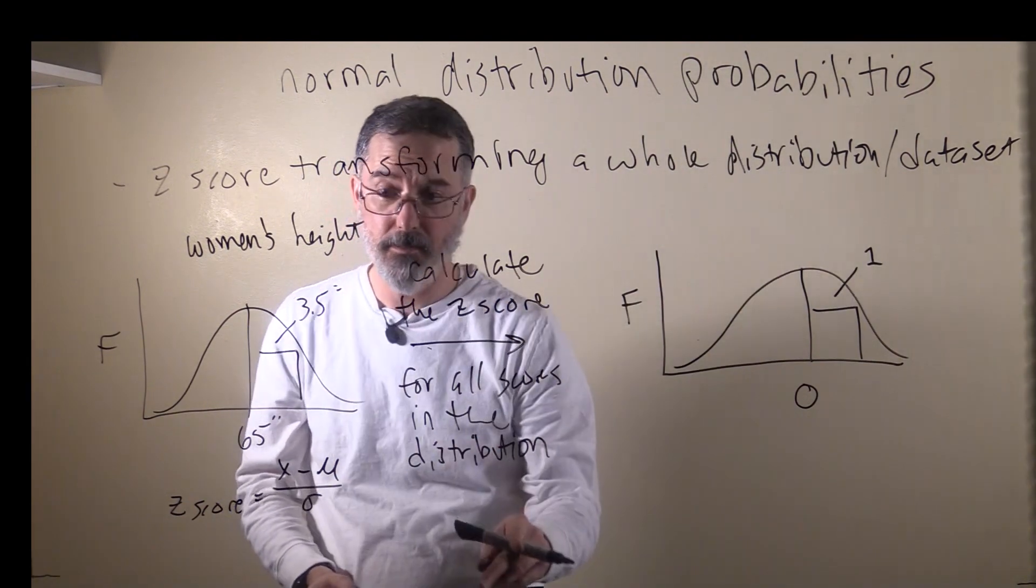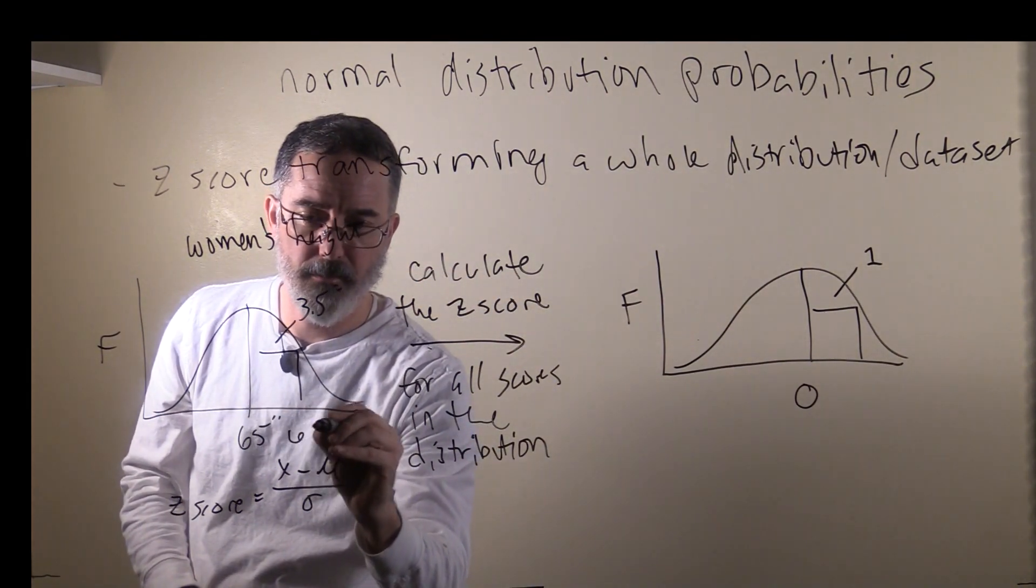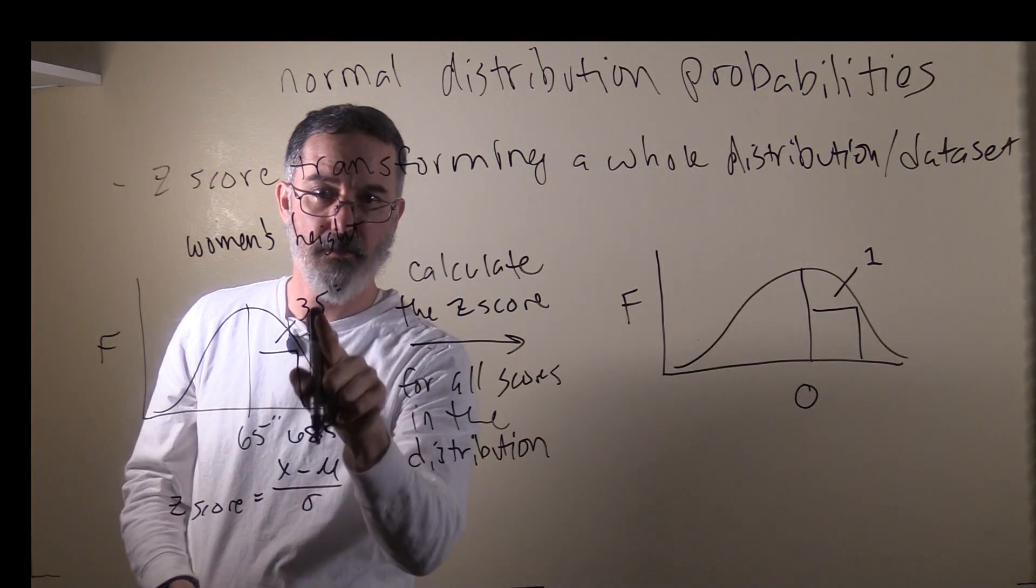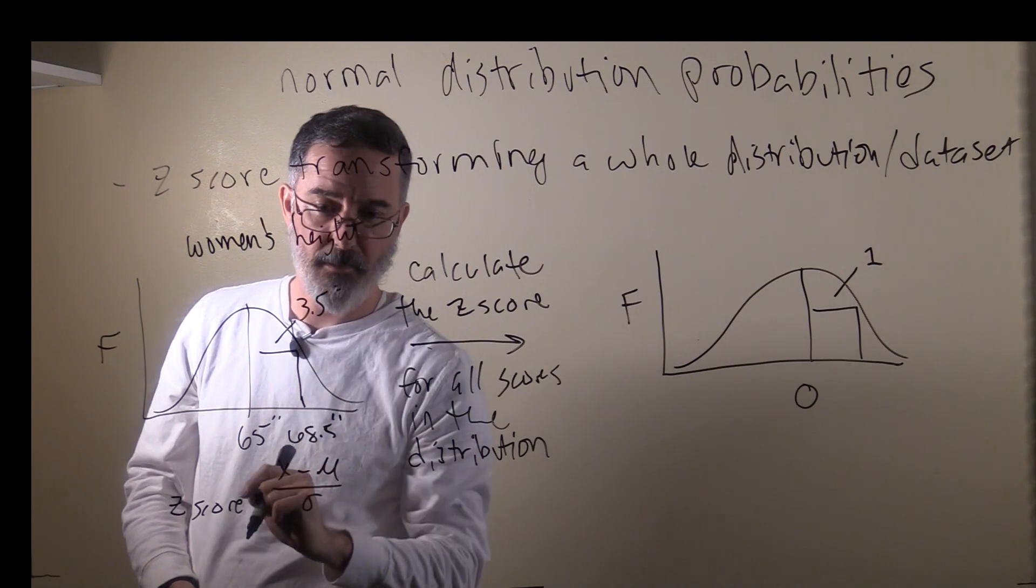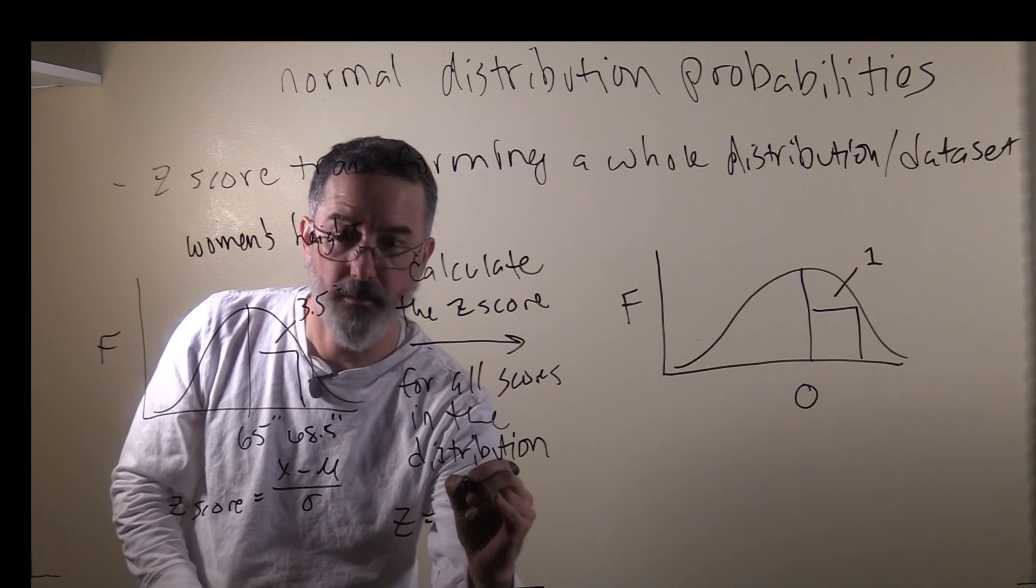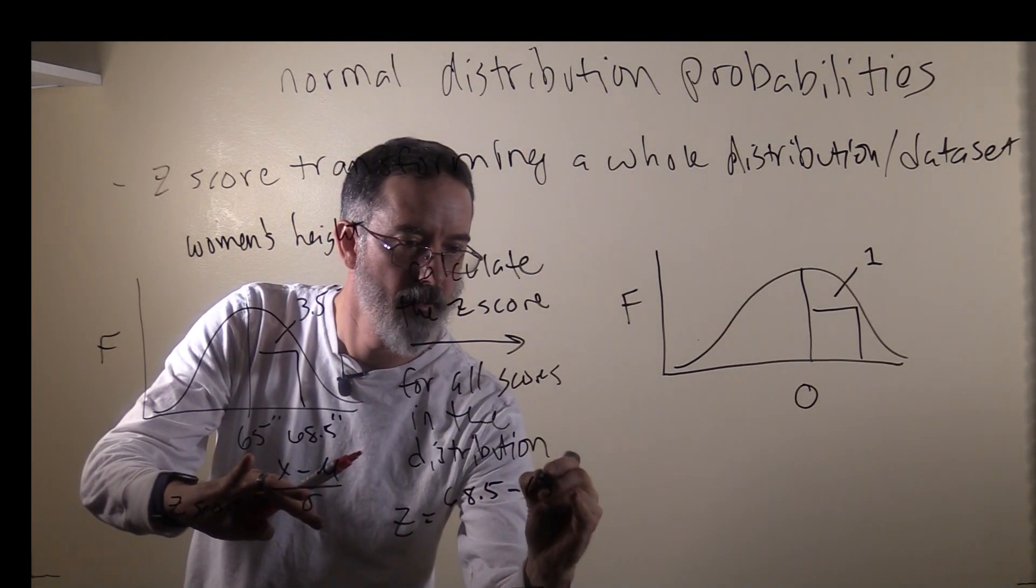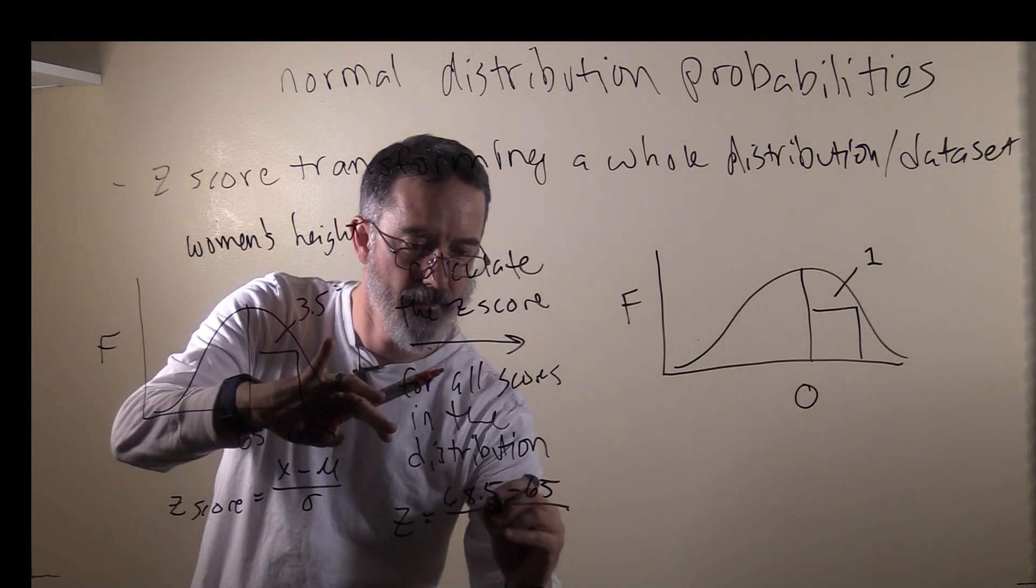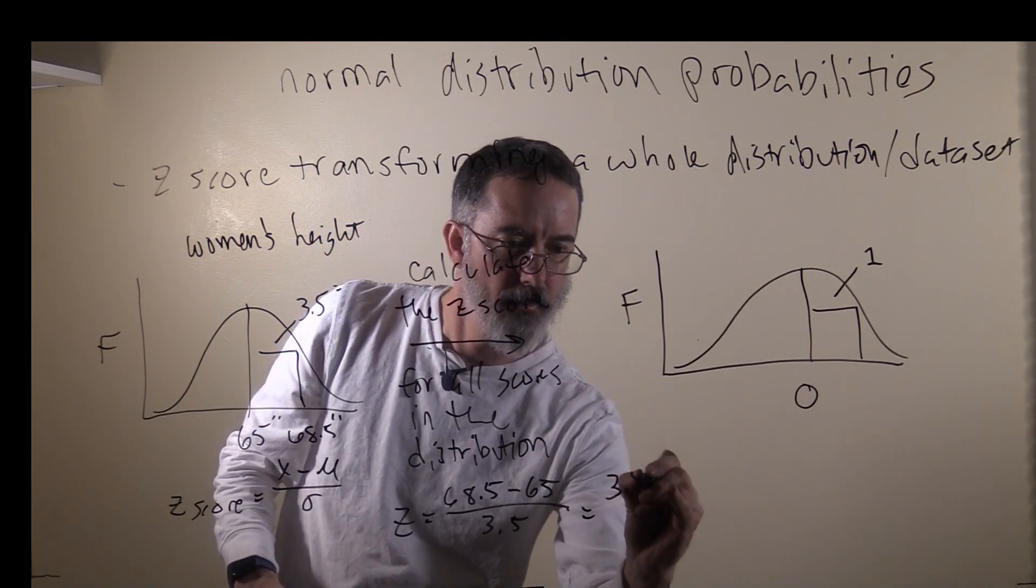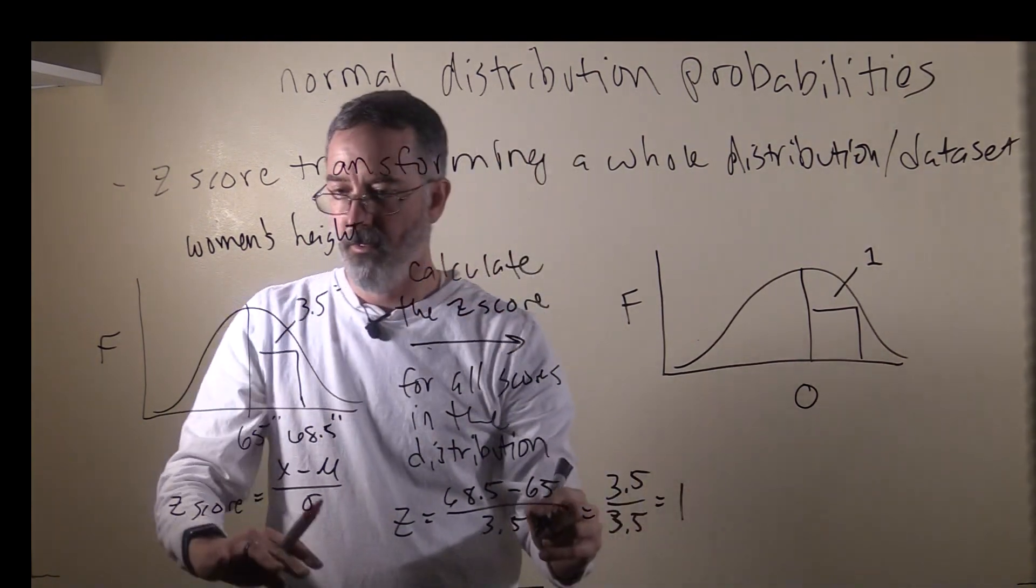Then, if we consider women who are one standard deviation over, they would be 68.5 inches tall. They would be right here because 65 plus 3.5 is 68.5. Let's see where they would end up over here. z equals their score of 68.5 minus the mean of 65, divided by the standard deviation, 3.5, and you'll get 3.5 divided by 3.5, or 1.